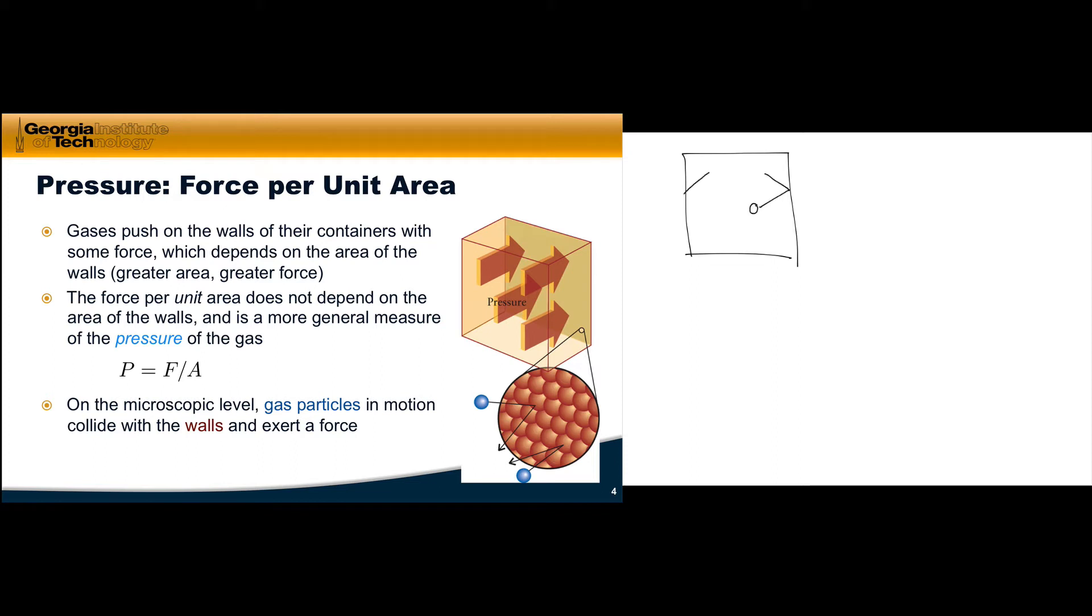Because the particles in a gas are in constant random motion, at regular intervals they collide with the walls of their containers. These collisions result in the exertion of a force on the walls of the container, represented here as the variable F.